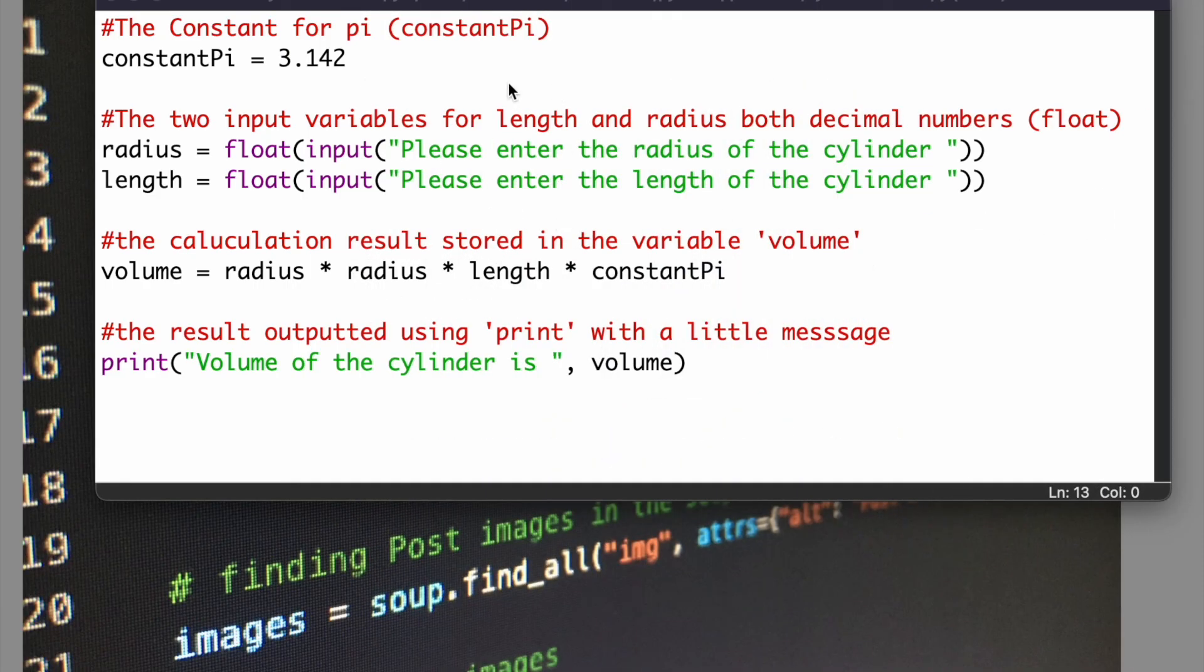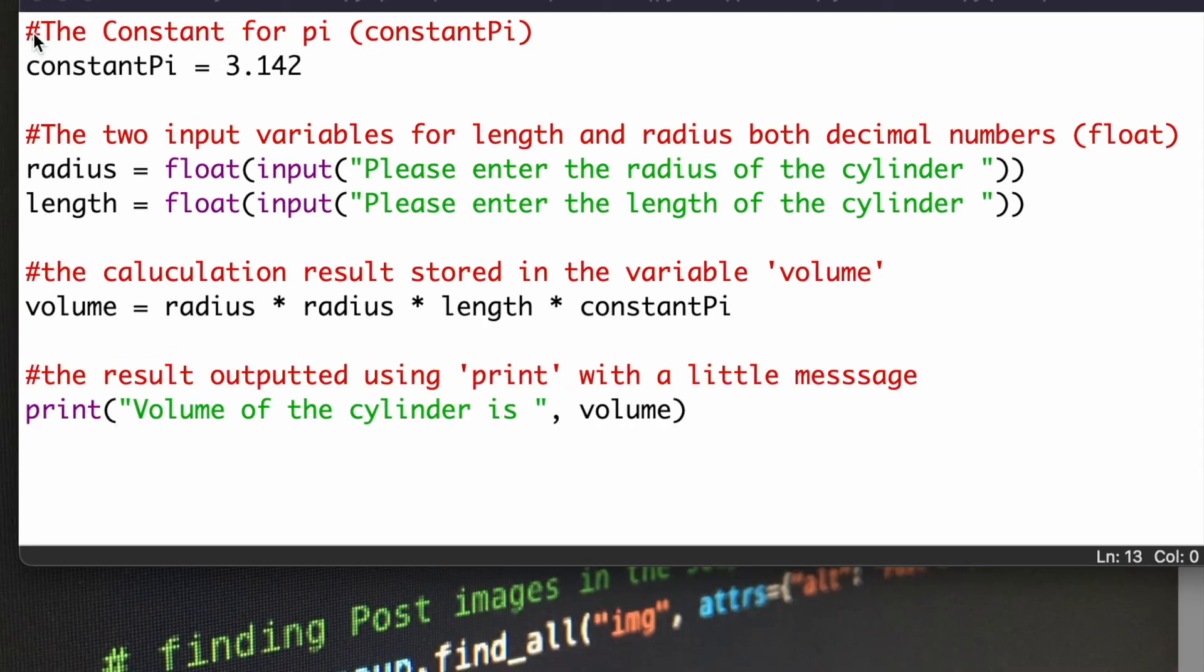When we do this challenge in Python, I've written it slightly differently. I've also included some hashtags for comments. So, the constant of pi, I've created a constant called constant pi, and this has got a fixed value of 3.142, basically the three decimal places. It can be any name we want, but I've called it constant pi.